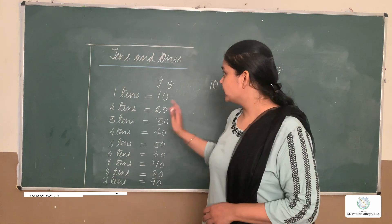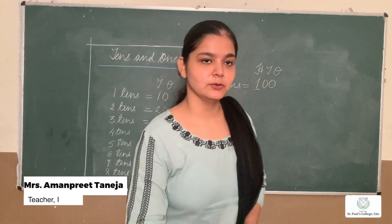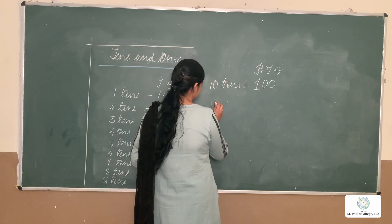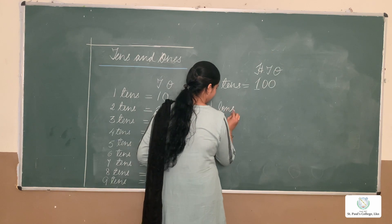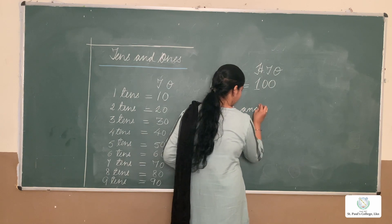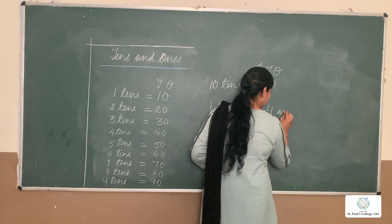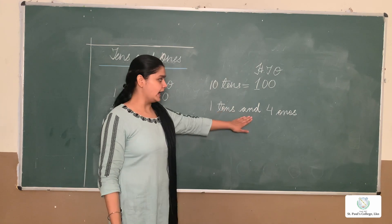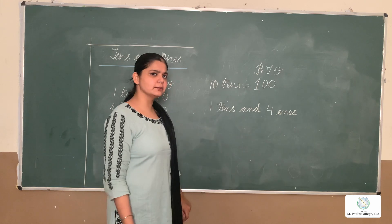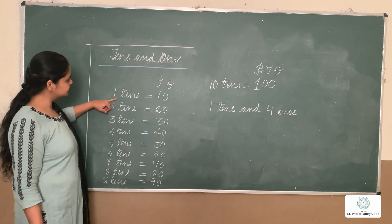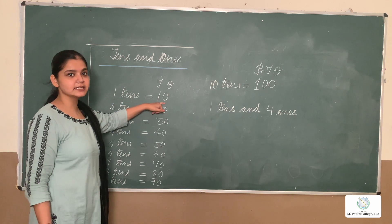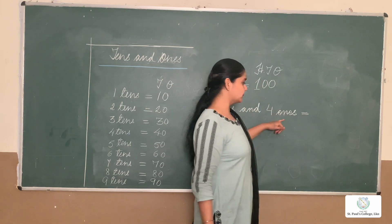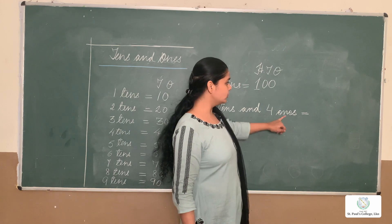Okay kids, I hope we have understood the concept of 10s and 1s. Let's do some questions. Suppose we have here 1 ten and 4 ones. What will this make? 1 ten and 4 ones — what will be this number? Let's see what ma'am has written. 1 ten is what? 10. So 1 ten would be 10. Very good. And we have something else also here — 4 ones.